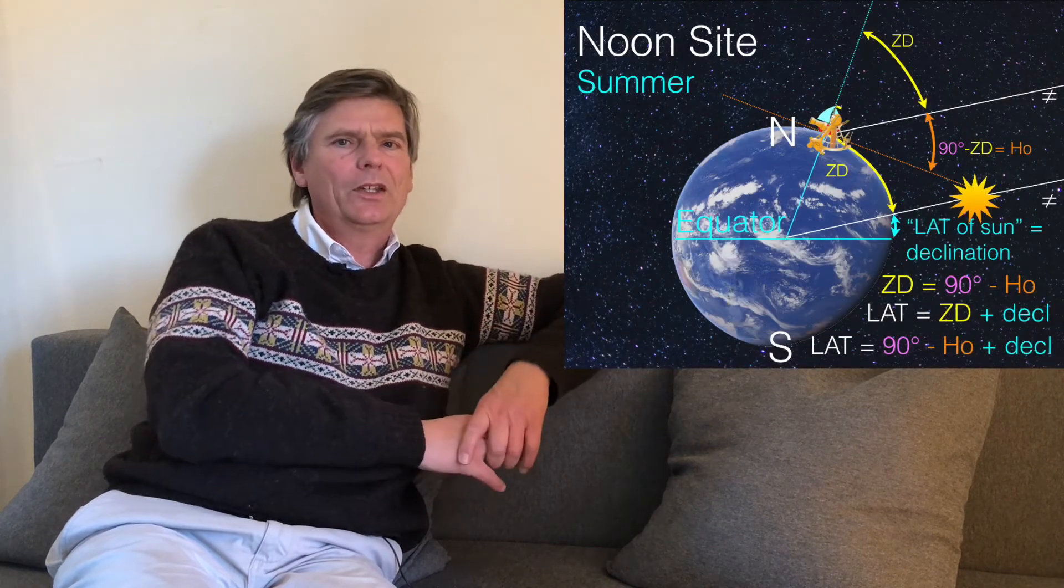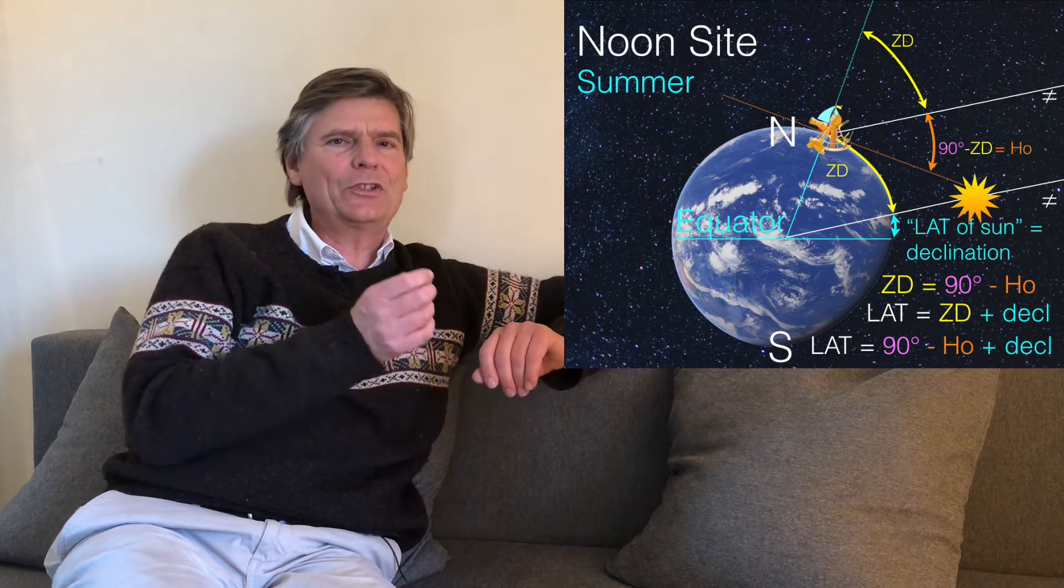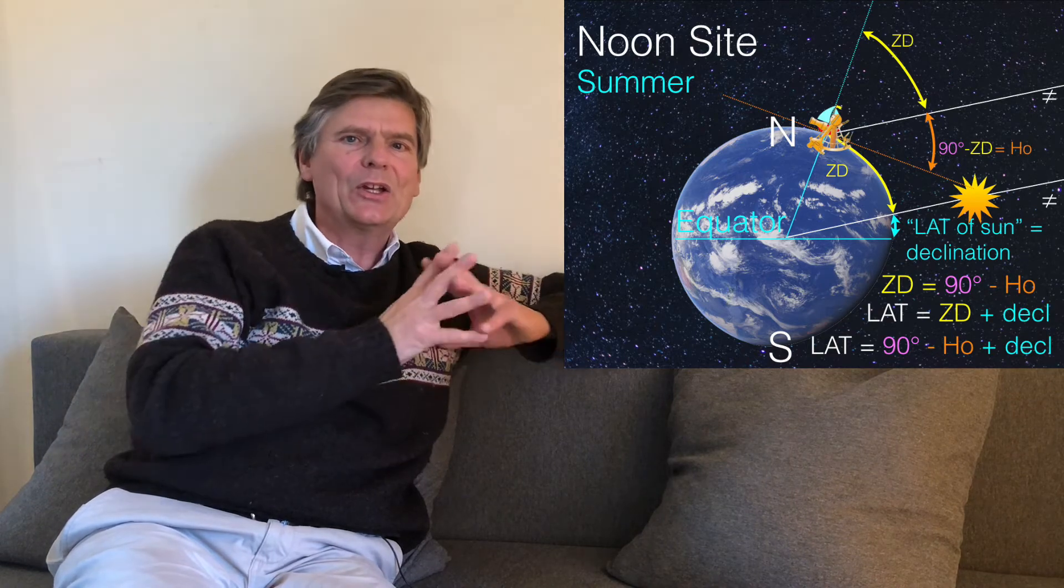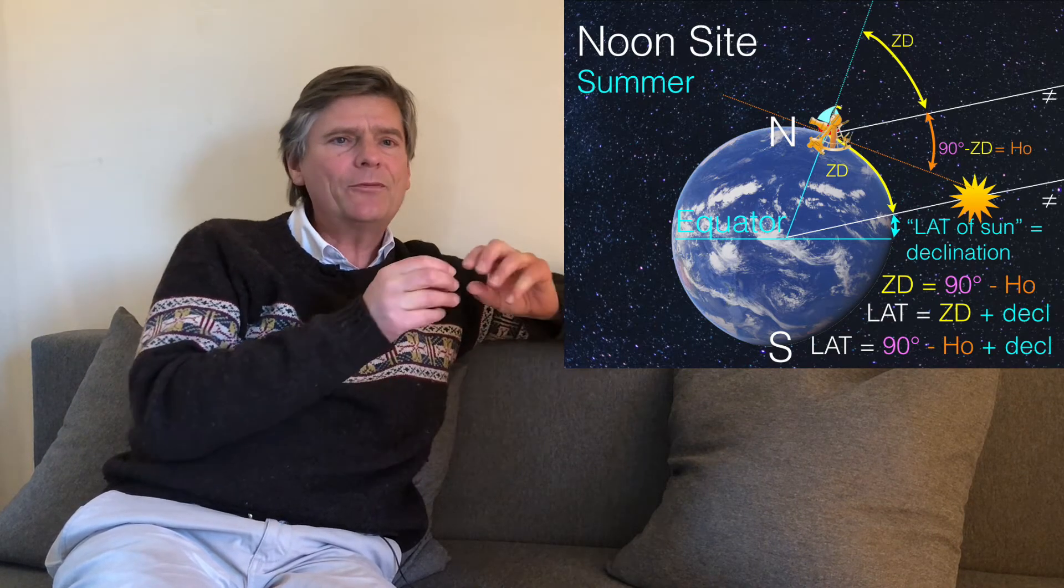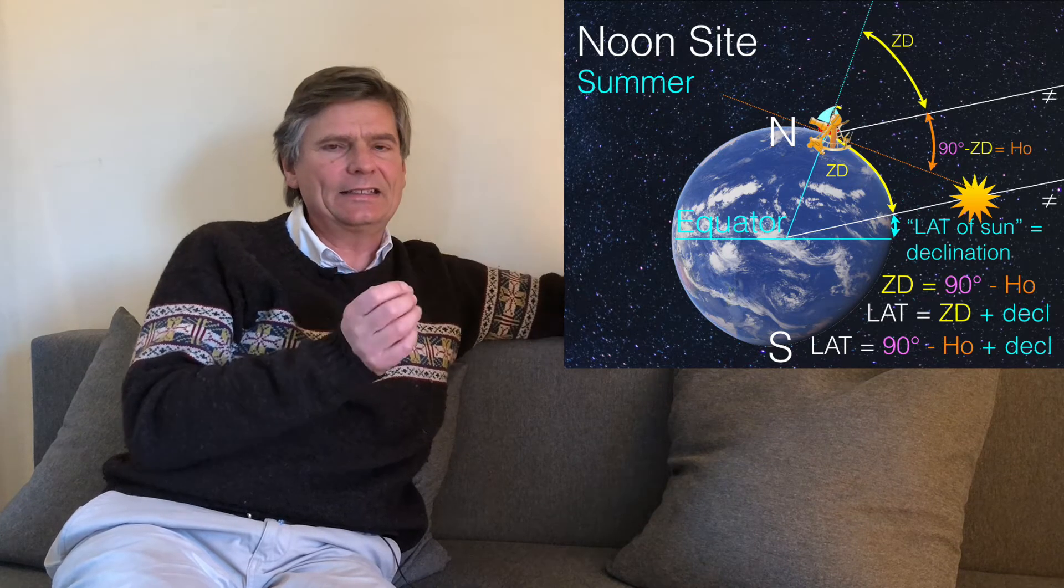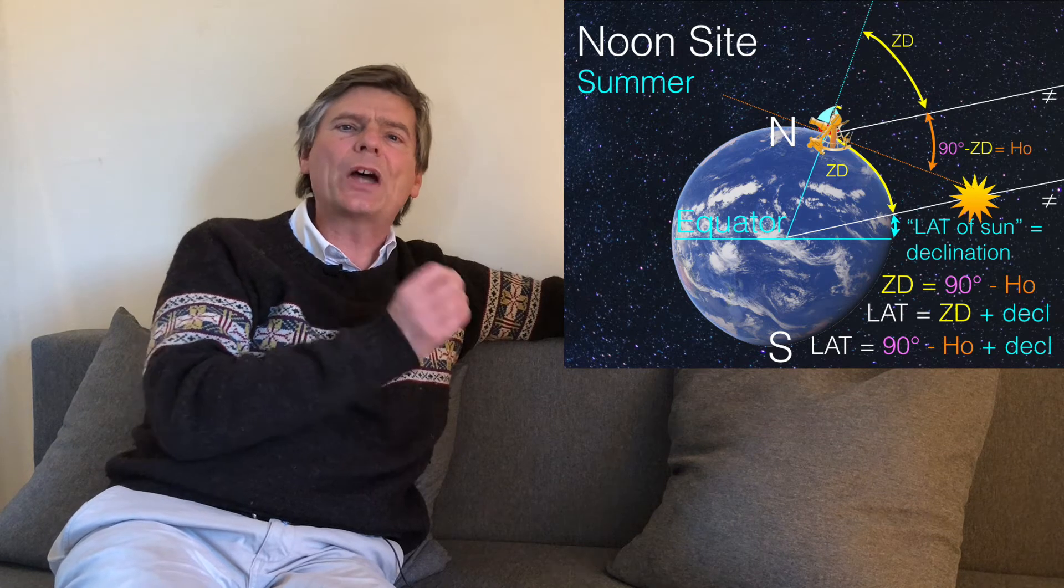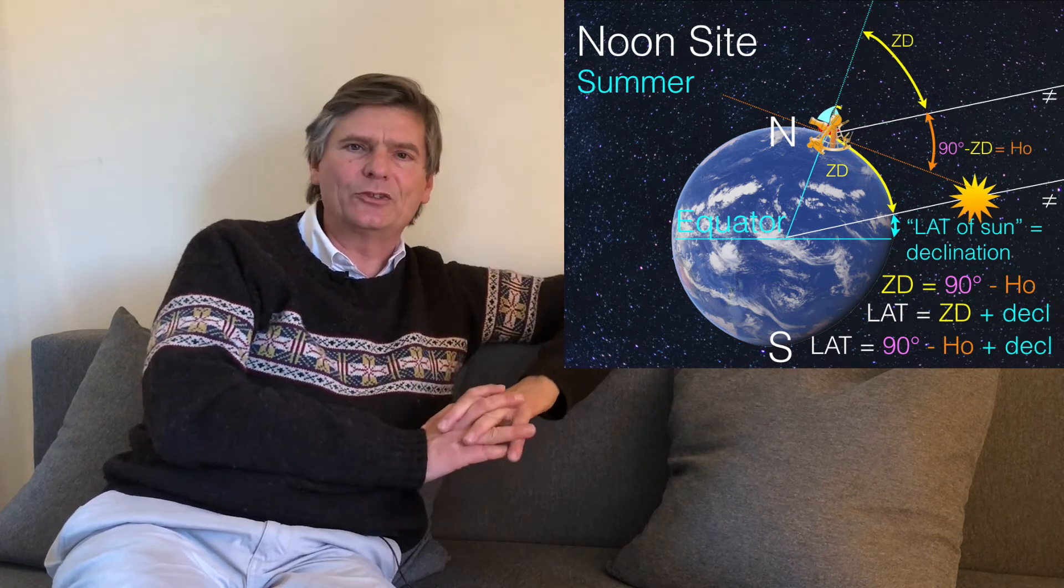But we've come quite far. We know that if we have our own position and then the position of the sun on the earth, that's where the beam of the sun goes directly through the surface to the center of the earth. If we can determine this distance, the scenic distance, while the sun is due south of us, then we can determine the latitude.